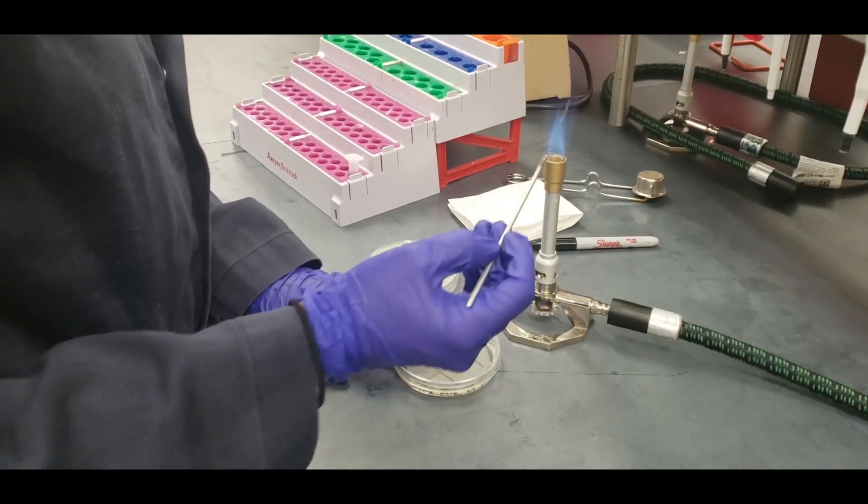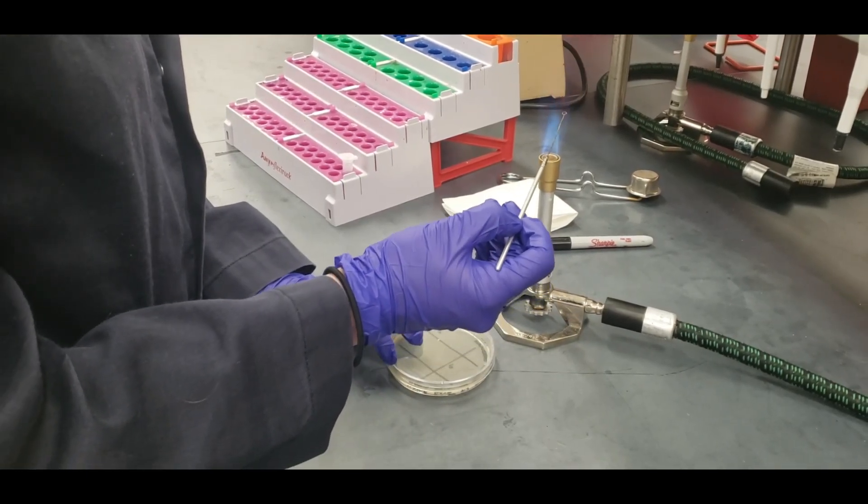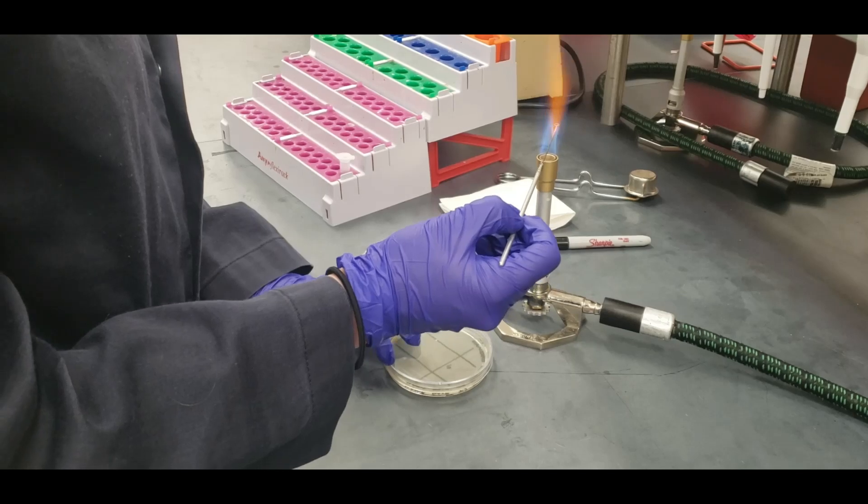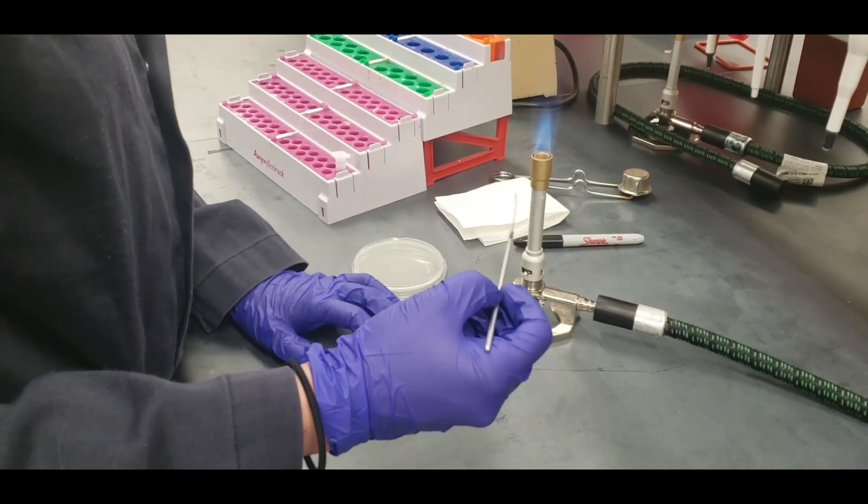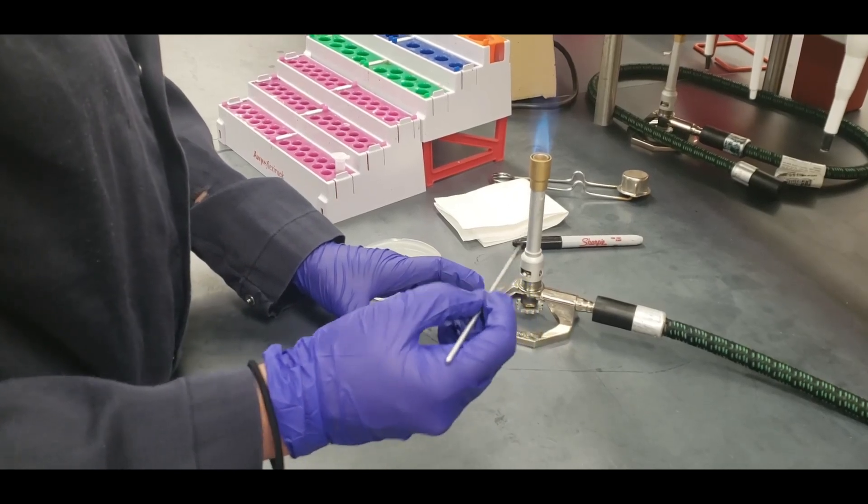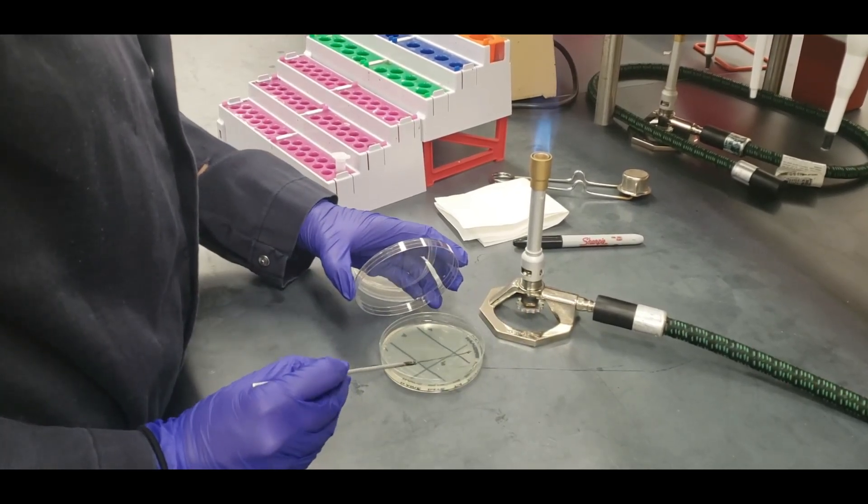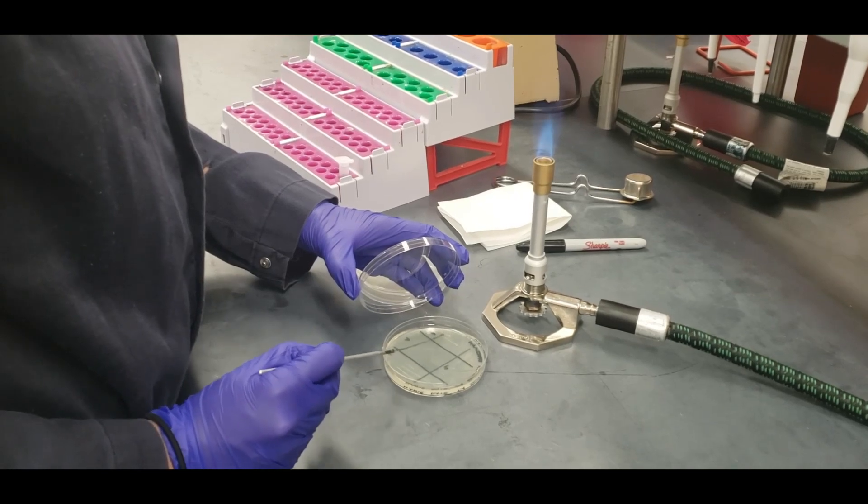After you've streaked all of quadrant two, you're going to flame your loop again, cooling it down. And you're going to pull only one time from quadrant two into quadrant three, streaking all of quadrant three.